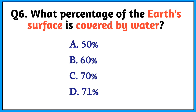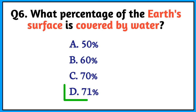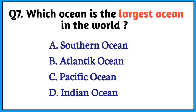Question number 6. What percentage of the Earth's surface is covered by water? The right answer is option D. 71%.